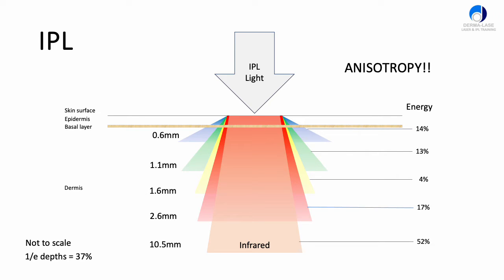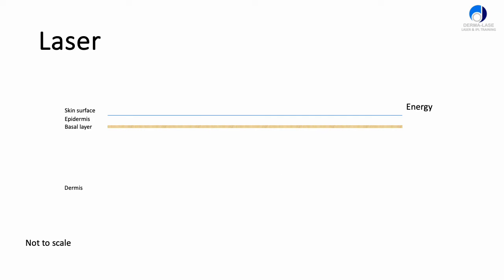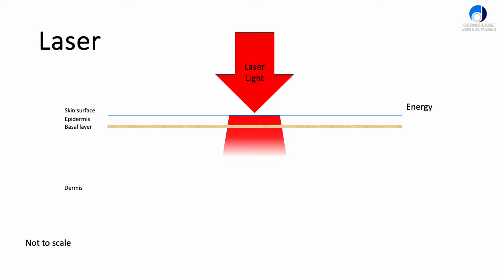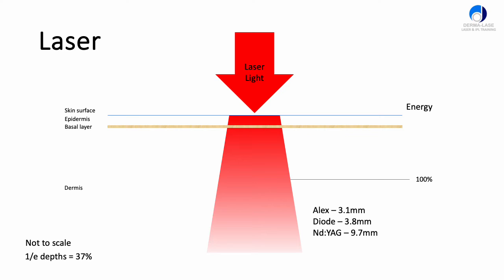How does that compare with laser energy? Laser light is just one wavelength — that's what lasers are good at, making single wavelengths, so all the energy is contained within that wavelength. The Alexandrite laser will penetrate to about 3.1 millimeters. Diode lasers at 808 or 810 nanometers penetrate down to about 3.8 millimeters. And the YAG at 1064 nanometers, similar to the 1200nm region with IPL, can go down to nearly 10 millimeters deep.